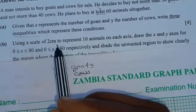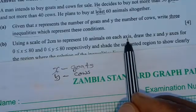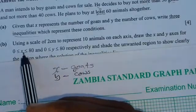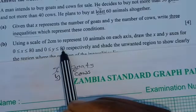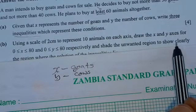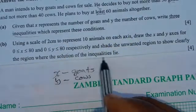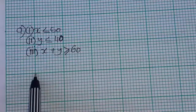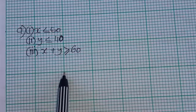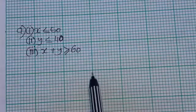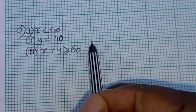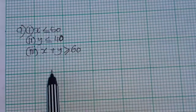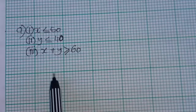Part B says: using a scale of two centimeters to represent 10 animals on each axis, draw the X and Y axes for values of X from 0 to 80 and values of Y from 0 to 80. Each big box on the graph paper is two centimeters, representing 10 animals on both axes.